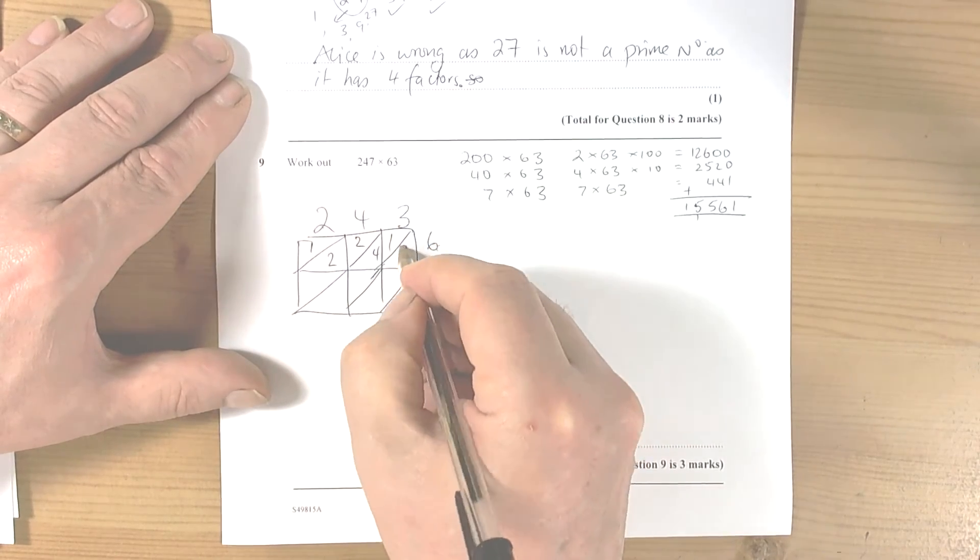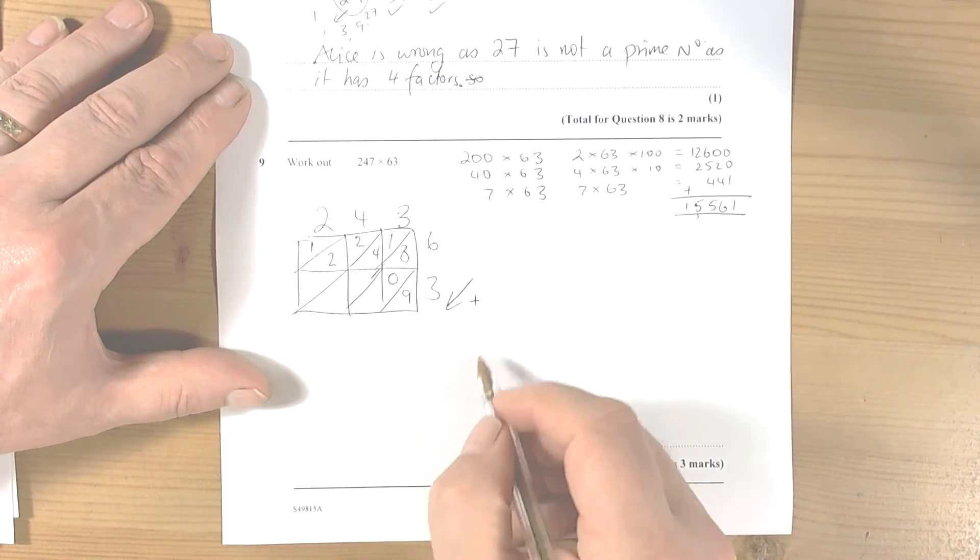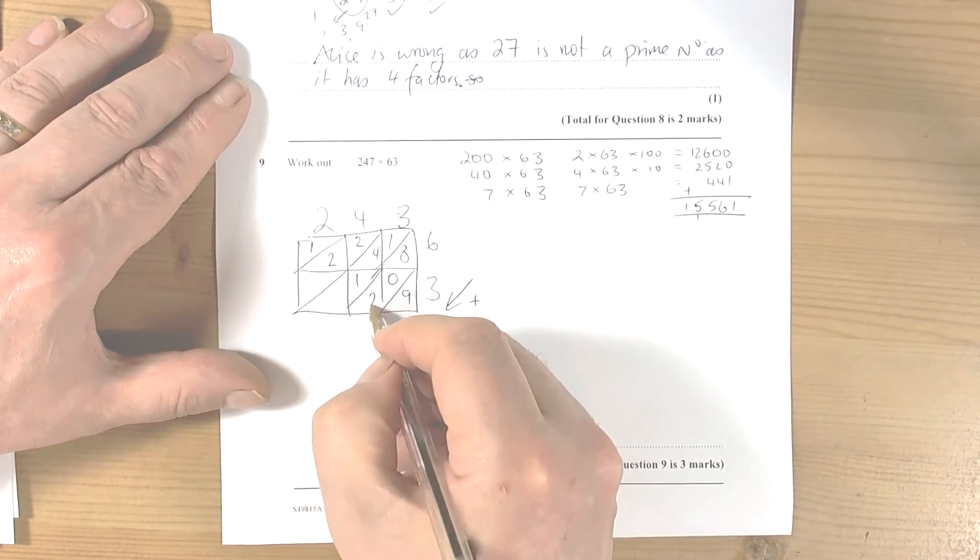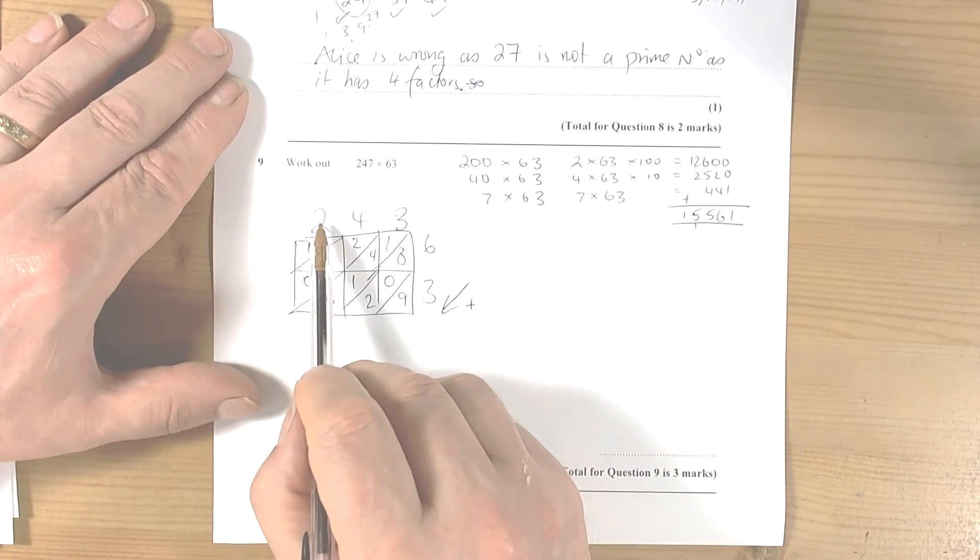3 times 3 is 9, so 0 in there and then 9. 4 times 3 is 12, and 2 times 3 is 6, so 0 there and 6. So you notice with this method then, you do the multiplication with the digits. So 2 times 6 is 12, one in the top part of the box and two in the bottom part.